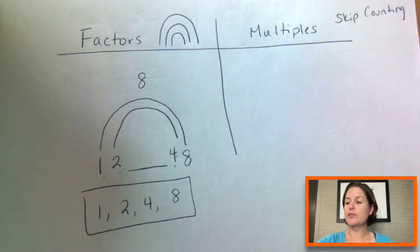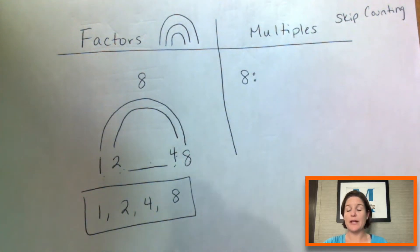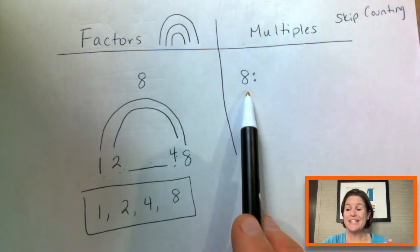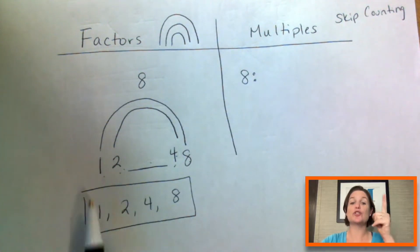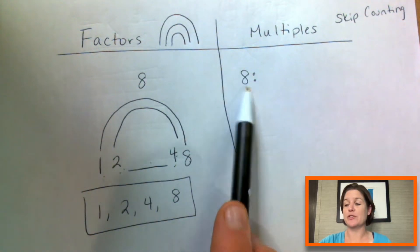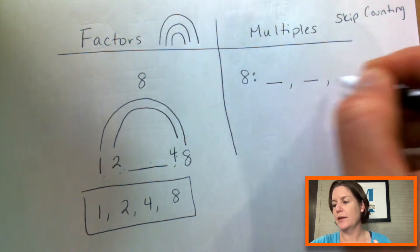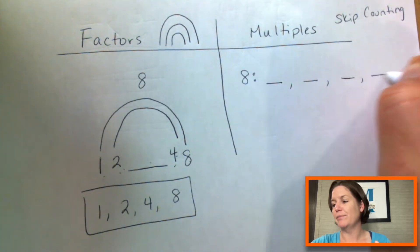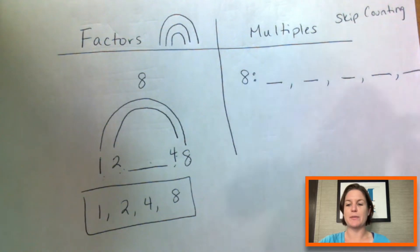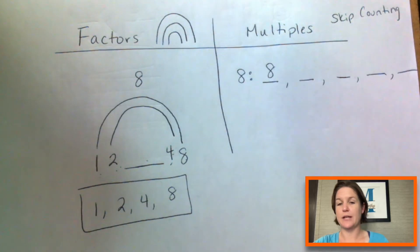All right. Now let's try finding the multiples of eight. Remember multiples are when we're skip counting by the number. We did a little bit of skip counting here to get to the number, but now we're going to skip count by the number. So let's count by eight. We'll just put the first five down just so you can see the pattern going on there. So we have the first one would be eight.